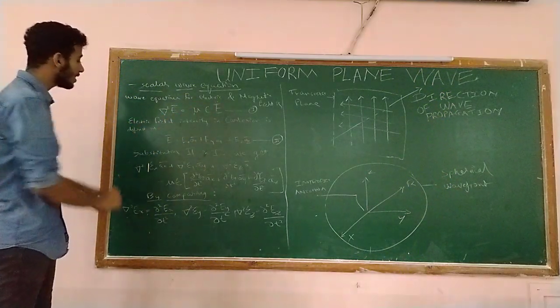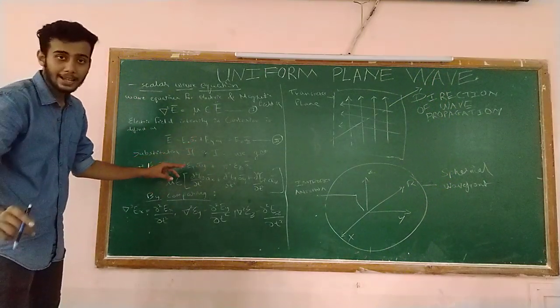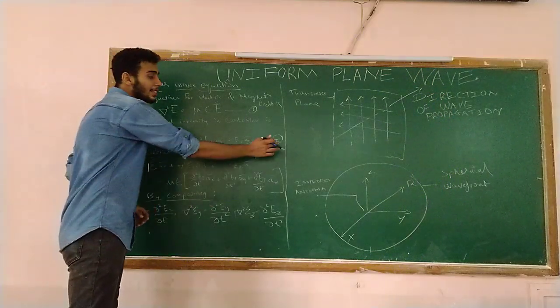Now, electric field intensity in Cartesian is defined as: electric field E equals to Ex x-bar plus Ey y-bar plus Ez z-bar. So let us give this equation number 2.